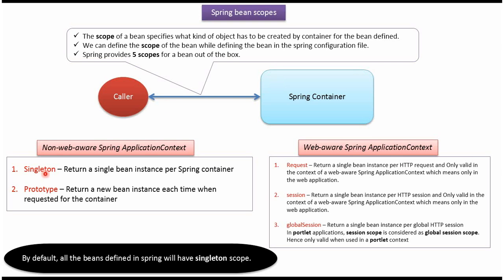Spring provides 5 scopes. The first one is singleton, the second one is prototype, the third one is request, the fourth one is session, and the fifth one is global session.